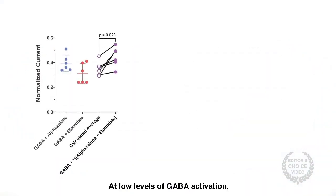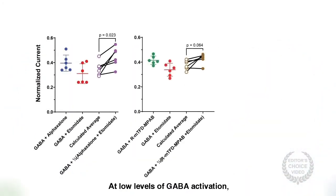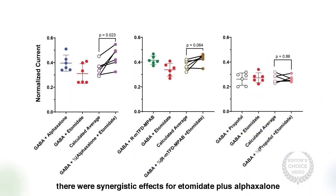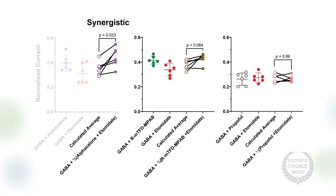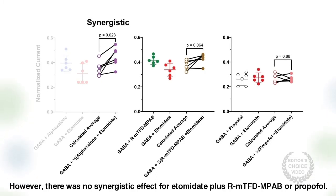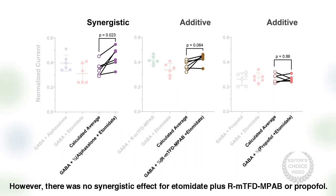At low levels of GABA activation, there were synergistic effects for etomidate plus alfaxilone. However, there was no synergistic effect for etomidate plus RMTFD-MPAB or propofol.